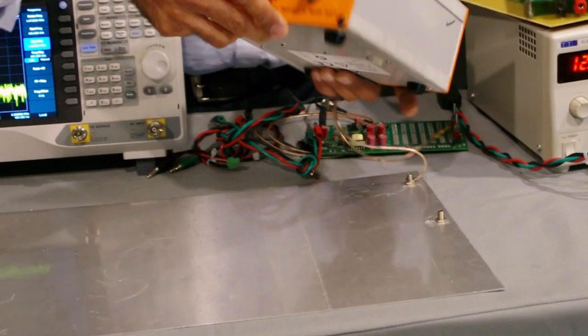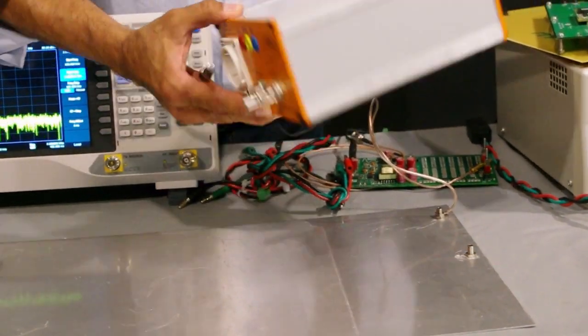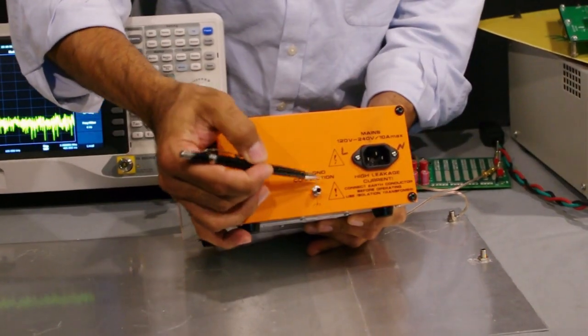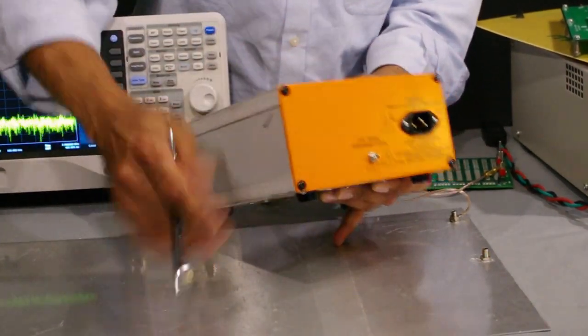Now this is a pre-compliance LISN, and regardless of what type of LISN it is, on the back of it there will be a connection for the ground plane.